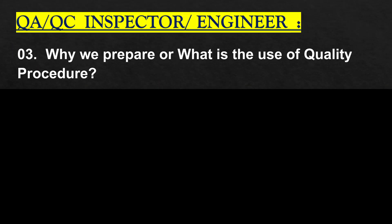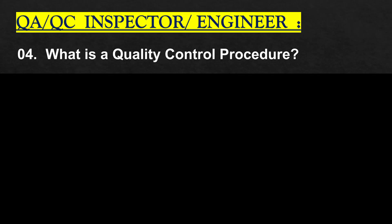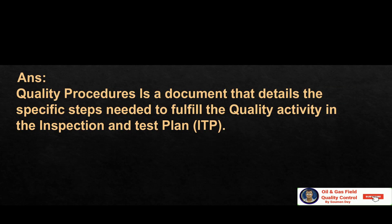Why do we prepare quality procedures, or what is their use? Quality procedures are used to establish instructions for inspection and control of all construction activities. This applies to incoming material, intermediary and final works. What is a quality control procedure? A quality procedure is a document that details the specific steps needed to fulfill the quality activity in the inspection and test plan.